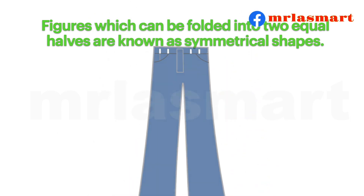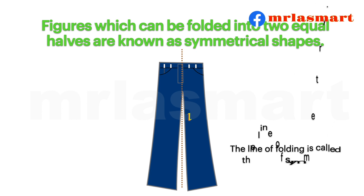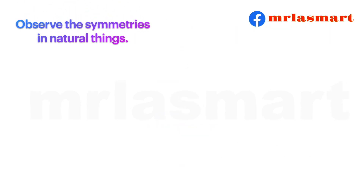Figures which can be folded into two equal halves are known as symmetrical shapes. The line of folding is called the line of symmetry. Observe the symmetries in natural things.